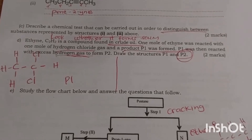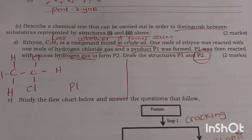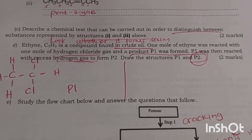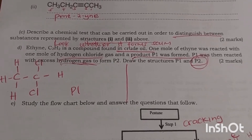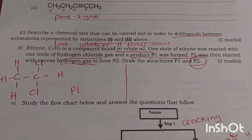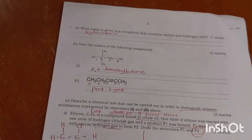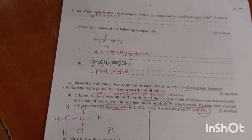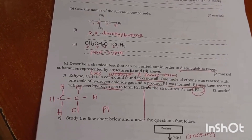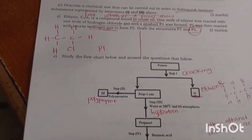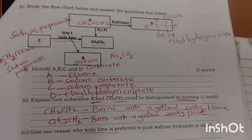The next question: describe a chemical test that can be carried out to distinguish between the substances represented by structure one and two. You are supposed to study the chart and answer the questions that follow.